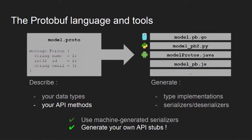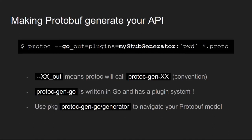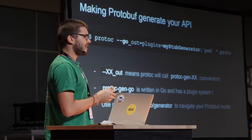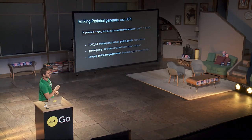Something even better is that you can describe your API methods — that's what gRPC is meant for. And you can generate your own API stubs from this description. The Protobuf compiler calls some generators; `protoc-gen-go` is the generator for Go code starting from Protobuf descriptions. It's written in Go and has a plugin system, so you can write a plugin to navigate your Protobuf model and produce the output you want.